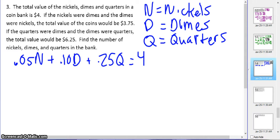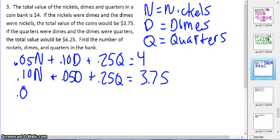Second part. If the nickels were dimes and the dimes were nickels, my total would be $3.75. So what does that mean? That means I'm going to switch values. If the nickels were dimes, they'd be $0.10. And if the dimes were nickels, they'd be $0.05. And the quarters are going to stay the same because it didn't say anything about the quarters. Now the last one said I'm going to switch the value of the quarters and the dimes. So the nickels are going to stay the same. But now the dimes are going to be worth $0.25, and the quarters would be worth $0.10. And that total would be $6.25.